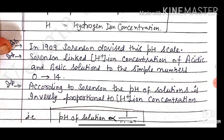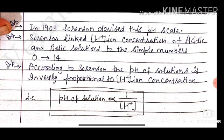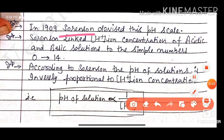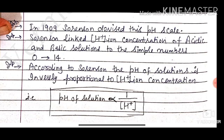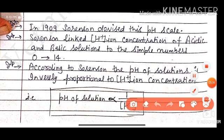In 1909, Sorensen devised the pH scale. Sorensen is the name of a scientist who discovered the pH scale. Sorensen linked the H-ion concentration of the acid and basic solution to simple numbers, 0 to 14. The pH scale runs from 0 to 14, covering acidic, neutral, and basic states.